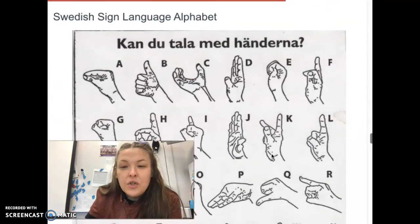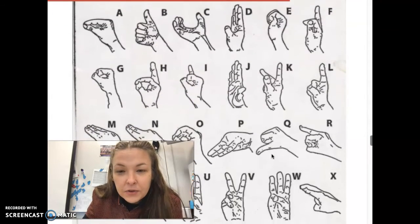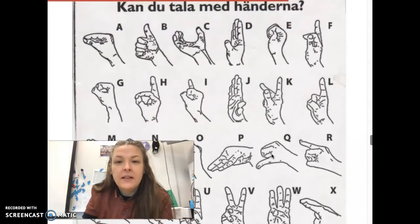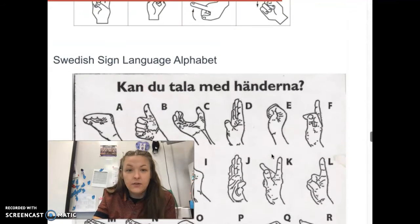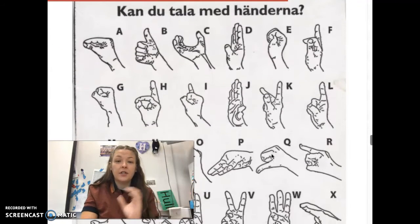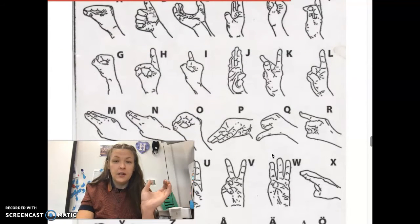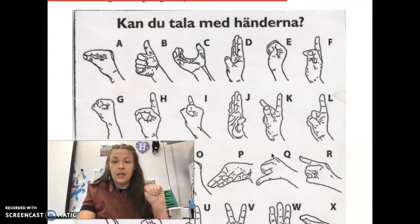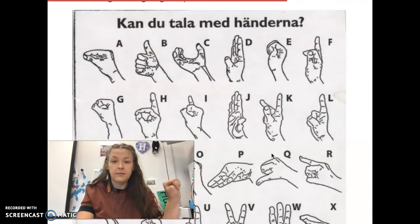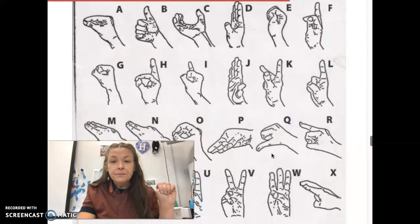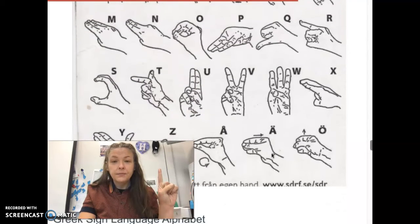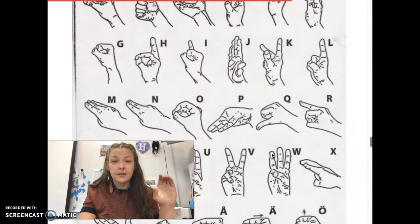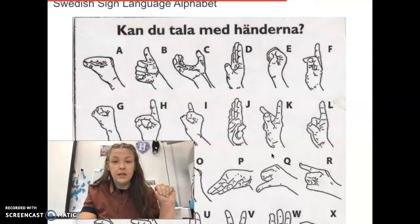Now I am going to pick, holy cow, this one looks really interesting, right? I'm going to pick this one. So to spell my name in Swedish sign language, I would do C, H, E, L, S, E, A. Chelsea.